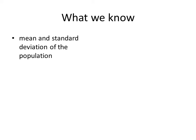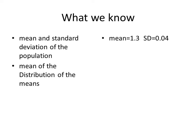Here's what we know. We know the mean and the standard deviation of population. Our mean is 1.3 and the standard deviation is 0.04. Now, what is the mean of the distribution of the means? The mean of the distribution of the means would be the same as the mean of the original population. So that's also 1.3.